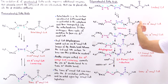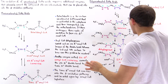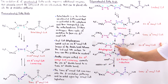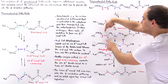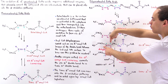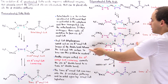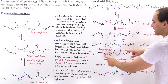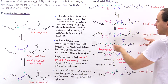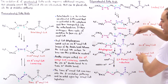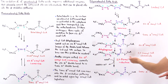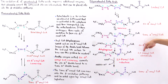Once we form this trans-delta-2-enoyl-coenzyme A intermediate, it can complete a round of the beta-oxidation pathway, forming a cis-delta-4-enoyl-coenzyme A molecule that now contains only one double bond between carbon 4 and carbon 5. This molecule is a substrate for acyl-coenzyme A dehydrogenase, and once that enzyme acts on it, it forms a double bond between carbon 2 and carbon 3, producing the 2,4-dienoyl-coenzyme A intermediate.